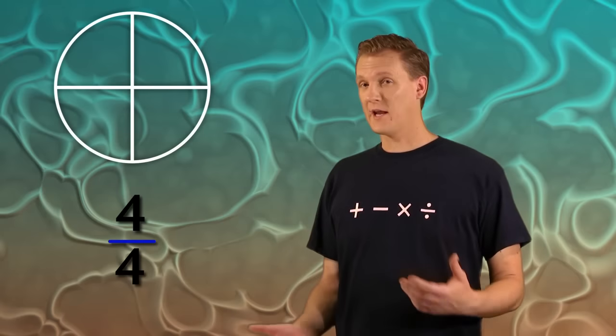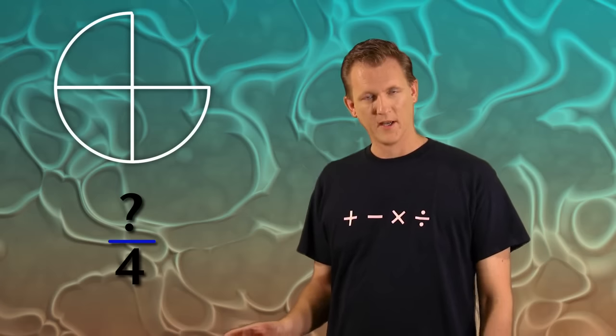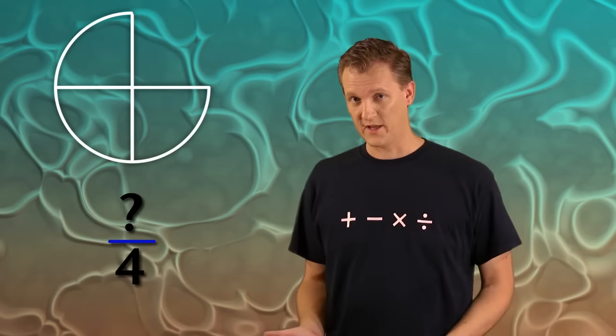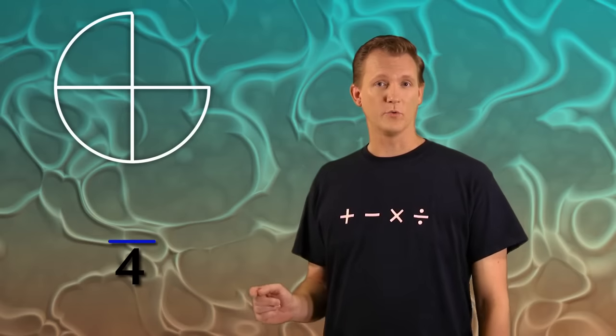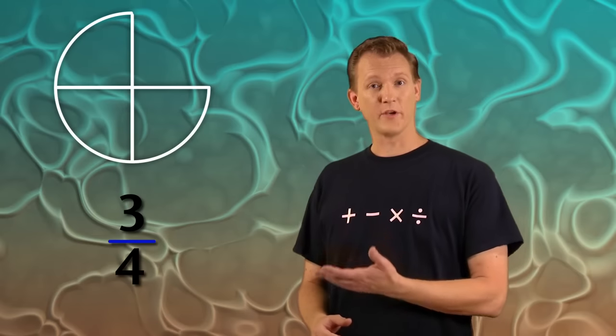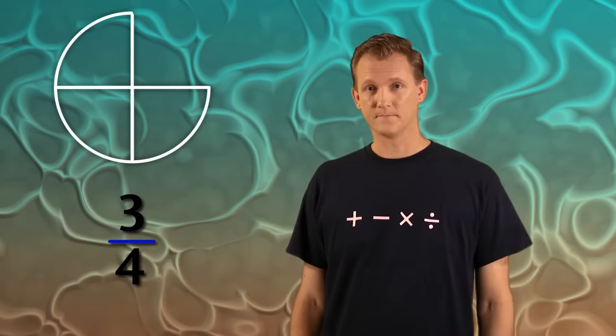But what if somebody came by and took away one part from the circle? Well, the circle still divided into four parts, so the bottom number would still be four. But I only have three of those parts left. So that means the top number will change to three. So I have three over four, or three-fourths of a circle. Make sense so far? Good.